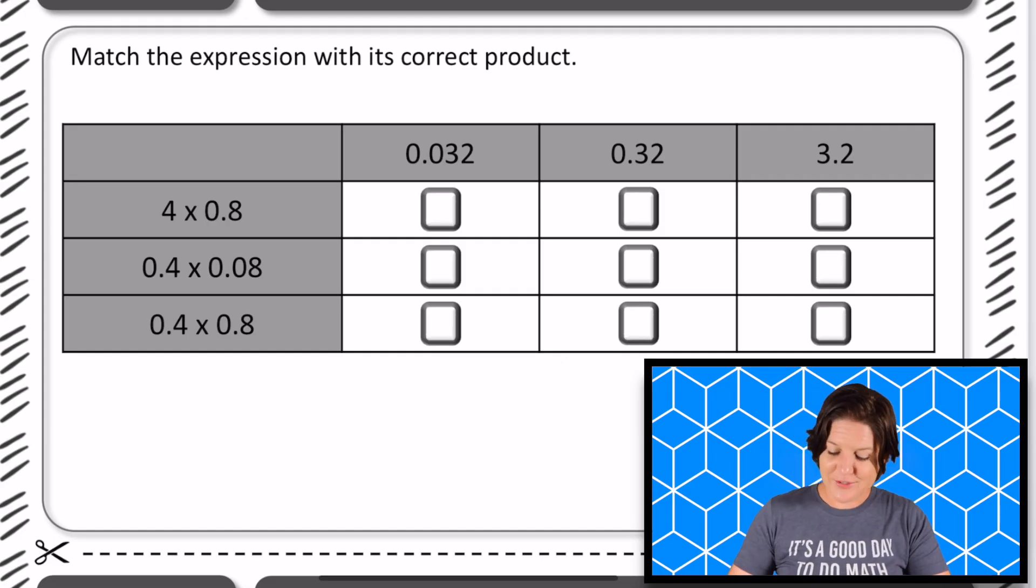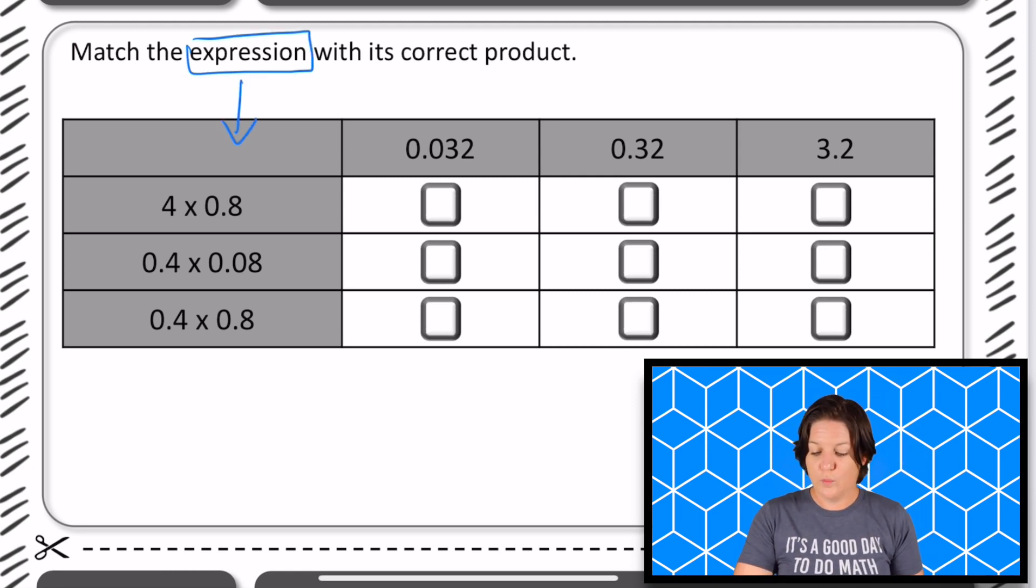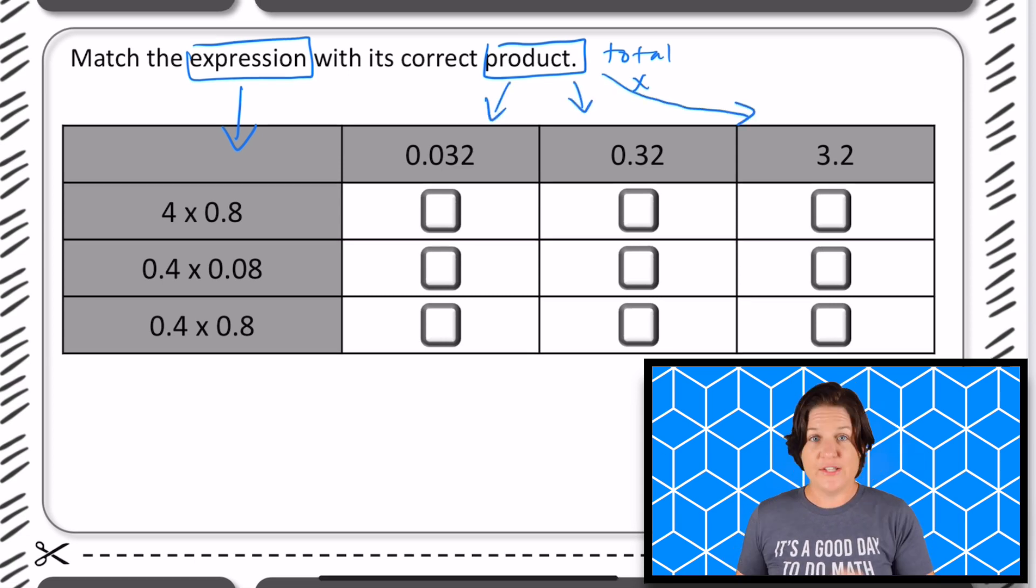Welcome back. So this one says to match the expression, which is down here, and then we have three expressions there with its correct product. The product is the total when we multiply, and those products can be found right over here. So we're going to go through this problem.